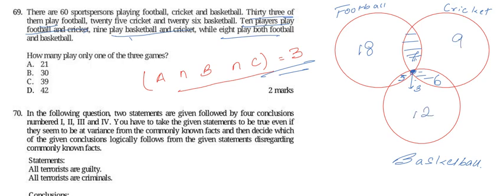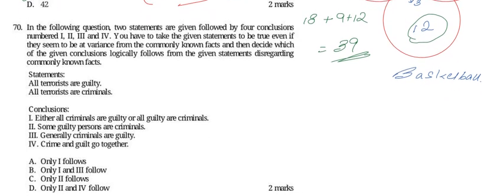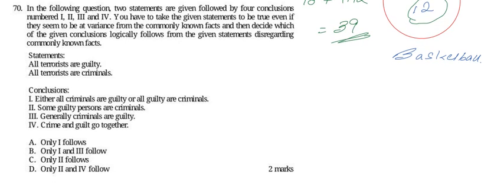Now checking what we need — how many players play only one of the three games: 18 play only football, 9 play only cricket, and 12 play only basketball. Summing these: 18+9+12=39. Hence 39 is our answer, and option C is the correct answer.